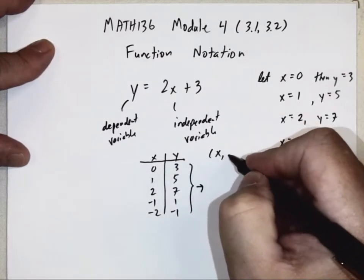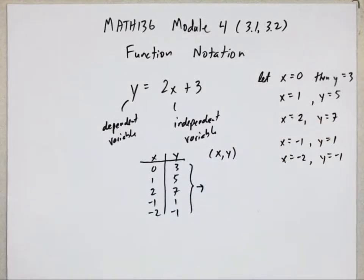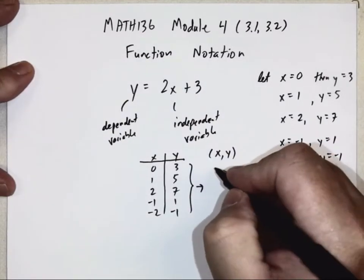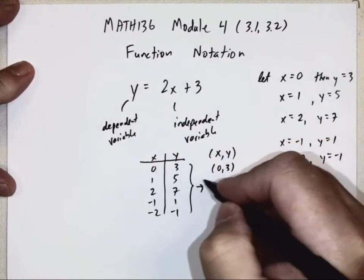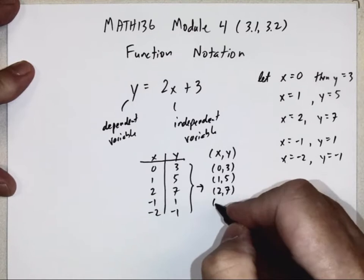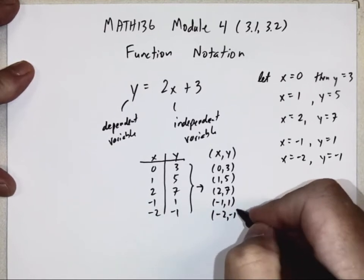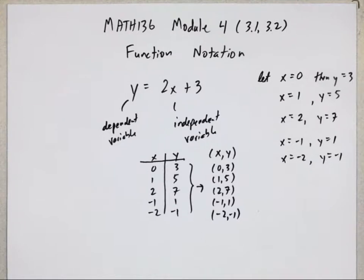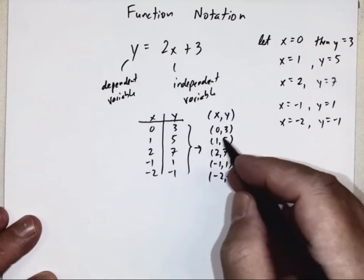An ordered pair has two numbers inside parentheses separated by a comma. The first number represents the value of x and the second represents the value of y. So these become (0, 3), (1, 5), (2, 7), (-1, 1), and (-2, -1). And what we did in the past — and will do again soon — is create a graph out of these points.